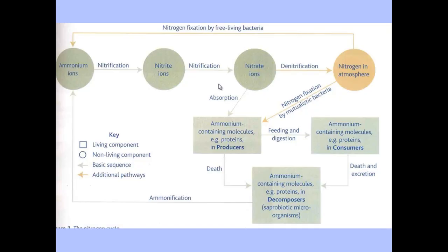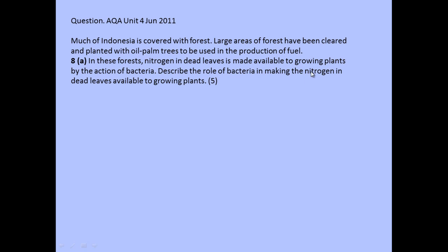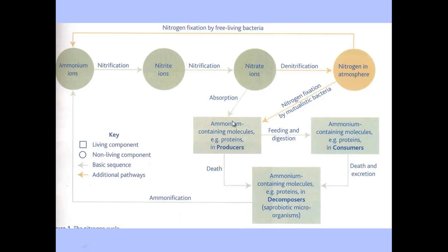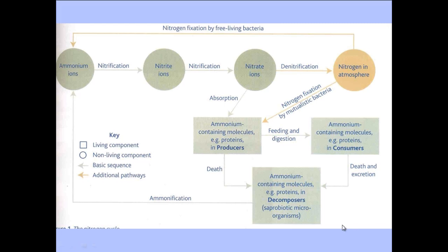Going back to the nitrogen cycle, the best approach is to establish what the question is asking you to go from and where it's asking you to finish up. The question asks about bacteria making nitrogen in dead leaves available to growing plants. So you have nitrogen-containing molecules found in plants, and you're looking at going from the death of the plant, down through the decomposers, and then making it available to growing plants. The only point nitrogen enters the plant is via nitrate ions, so you're tracing the path from the death of the plant through to nitrate ions.